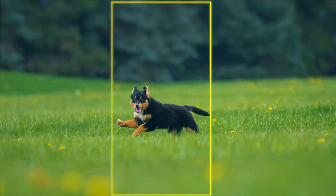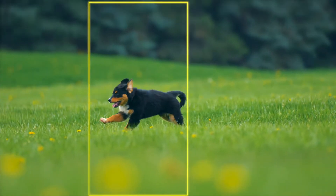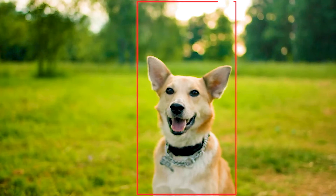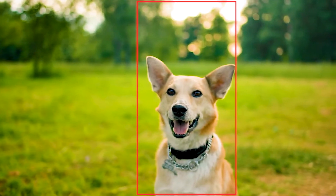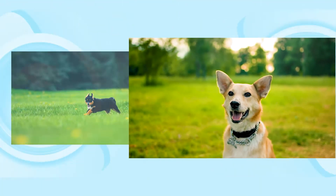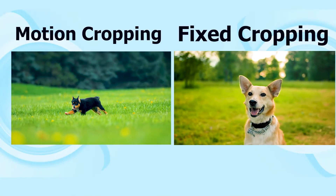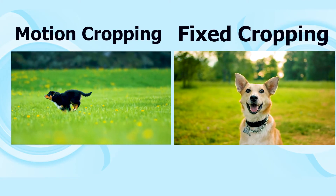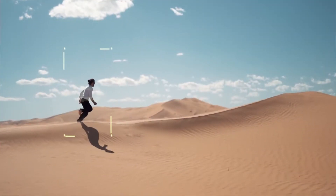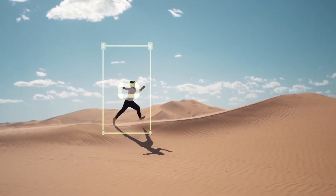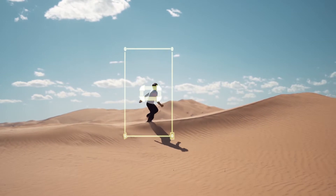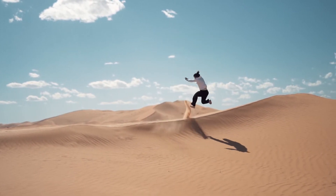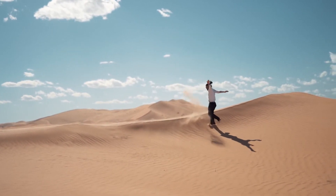Before you dive into your work, you need to figure out if the subject that you wish to keep in the frame makes any movement. Then, based on that, decide accordingly how to make the crop. There come along two types of cropping. First off, if the subject is moving, you could go directly to Motion Editor to do the cropping, which will save you a lot of work.